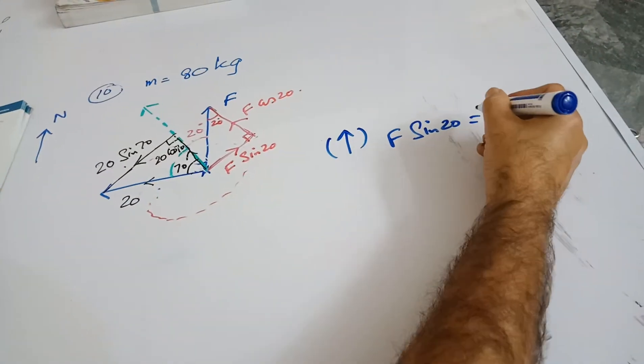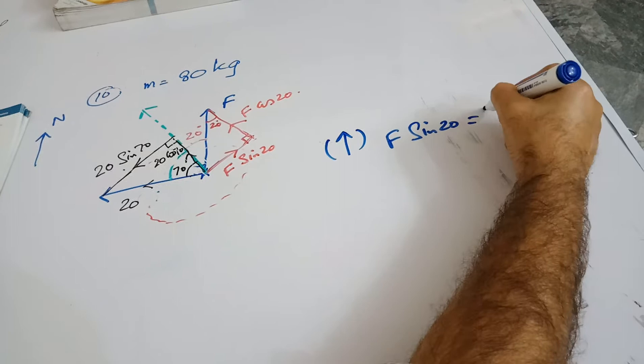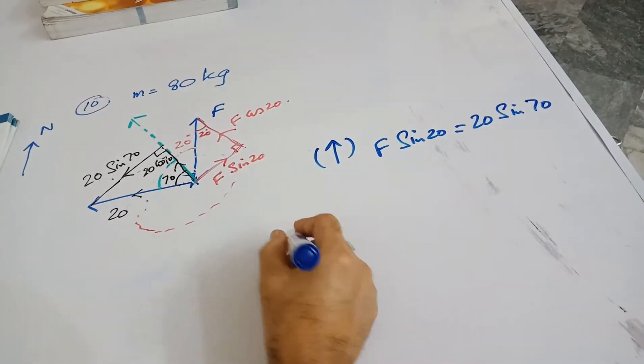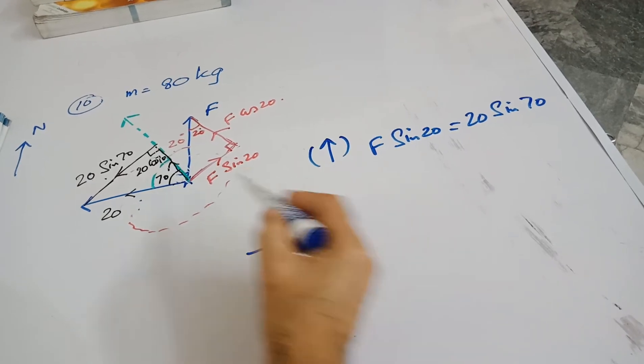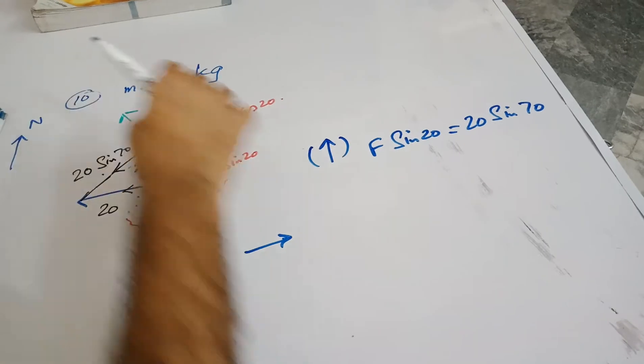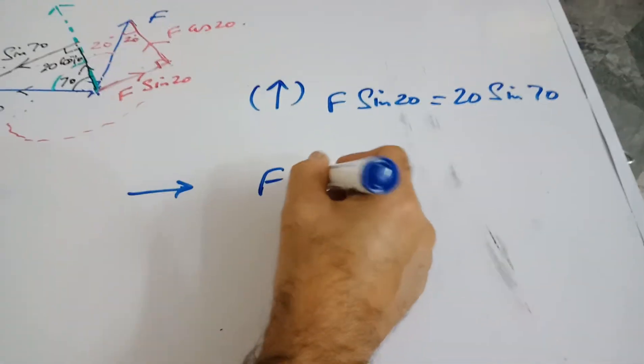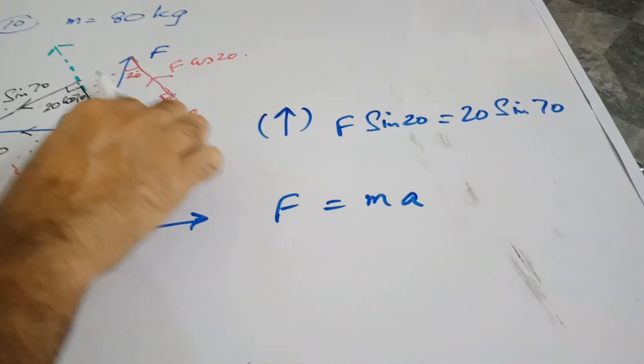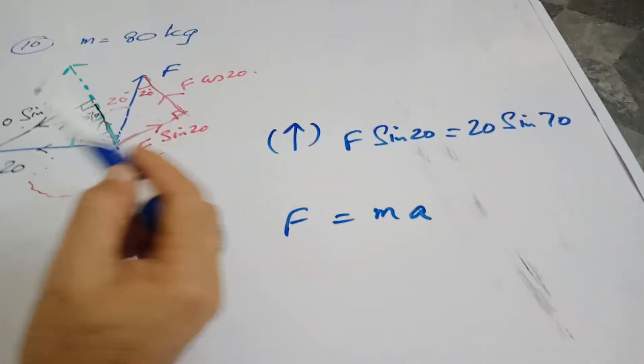So if I use this arrow, that means F sine 20 equals 20 sine 70. This will give you the value of F. Now this is basically being accelerated, so there is no equilibrium thing, but we do apply that F equals MA.